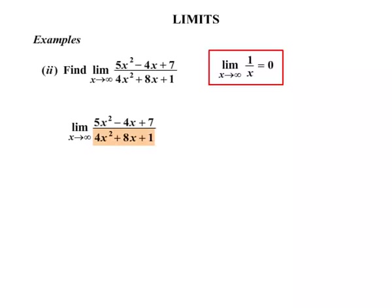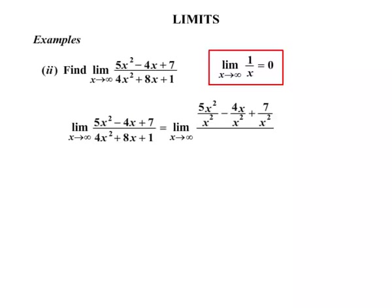Let's rewrite the question. We look at the bottom and identify the highest degree term, which is x squared. We then divide everything by x squared. So we rewrite the limit as x approaches infinity: on the top, 5x squared over x squared, minus 4x over x squared, plus 7 over x squared. Everything on the bottom is also divided by x squared: 4x squared, 8x, and 1 — all divided by x squared.